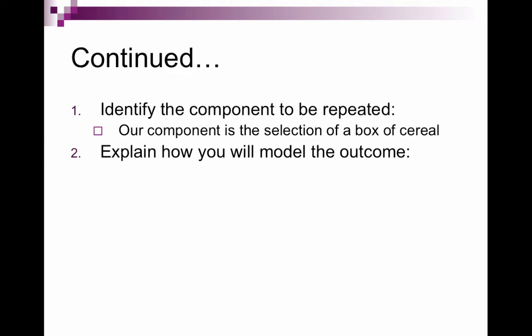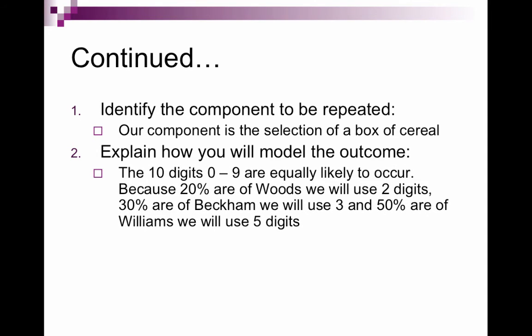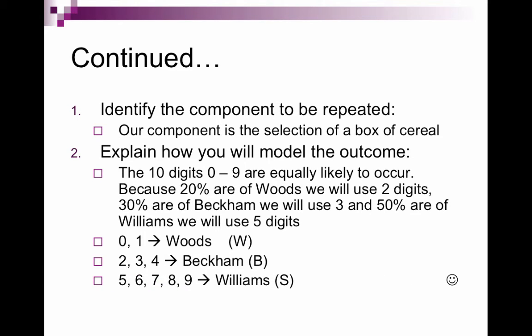Then we have to explain how we are going to model the outcome. Because ten digits zero through nine are equally likely. We use zero through nine because those are ten digits, including zero. Twenty percent are going to be Tiger Woods. So we are going to use two digits to represent Tiger Woods. Thirty percent are Beckham, so we are going to use three digits to represent Beckham. And then fifty percent are Serena Williams, so we are going to use five digits to represent Serena Williams. So I would say zero and one is going to be Tiger Woods. Two through four will be David Beckham. And five through nine will be Serena Williams.